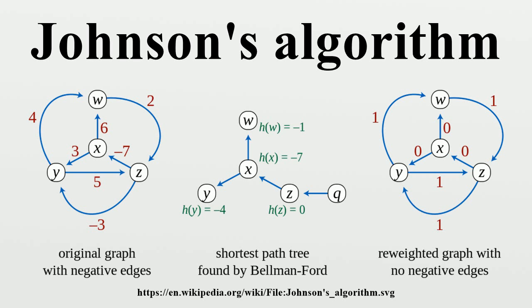A shortest path tree is computed by the Bellman-Ford algorithm with Q as starting vertex, and the values H computed at each other node is the length of the shortest path from Q to that node.